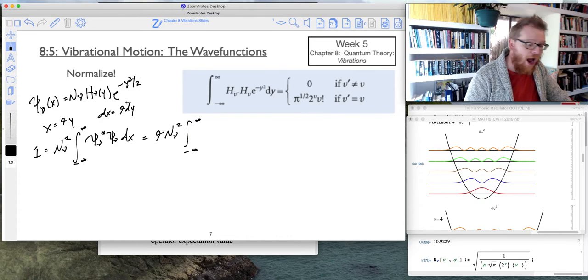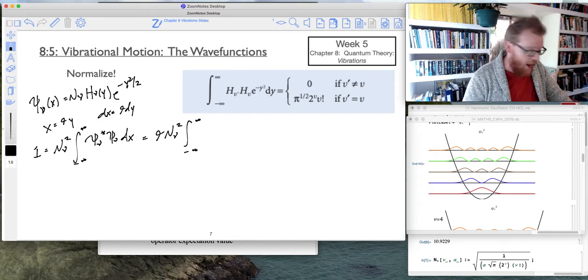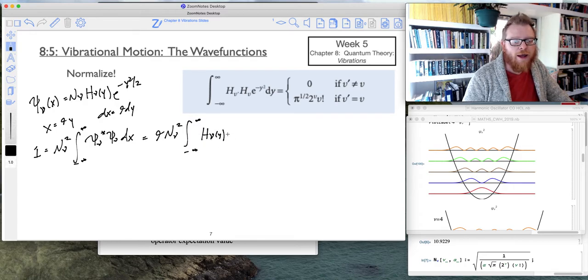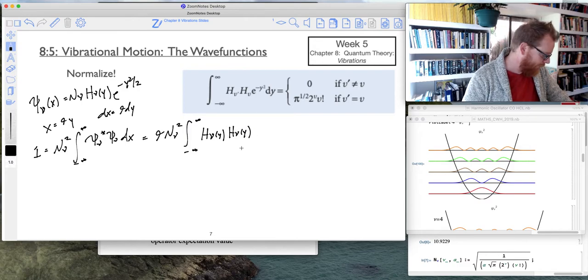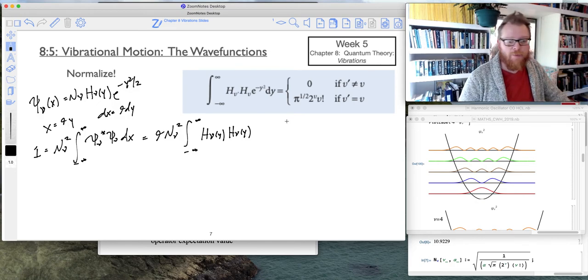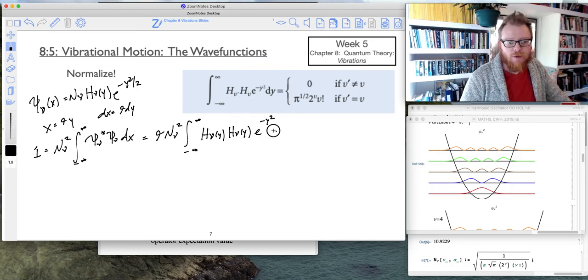Well, when I do that, I'm squaring it, psi star times psi, and there's no imaginary numbers in there. Then what I get is something that looks like this: h nu of y times h nu of y, and then of course we square the e to the negative y squared divided by two, which just becomes e to the negative y squared dy.